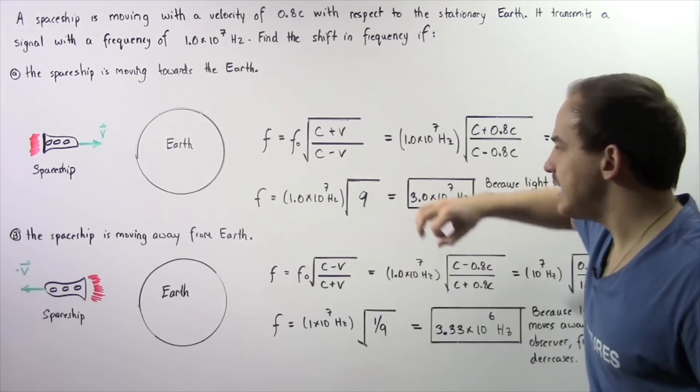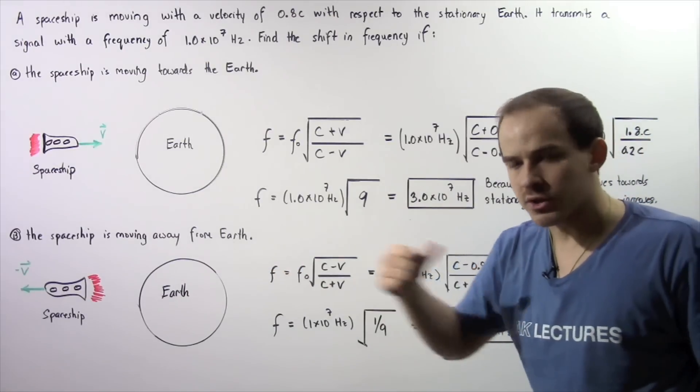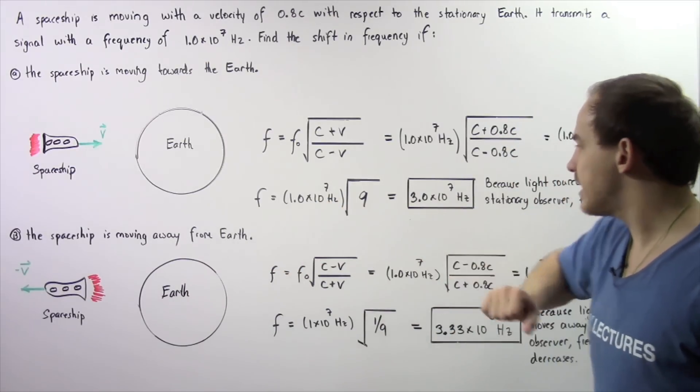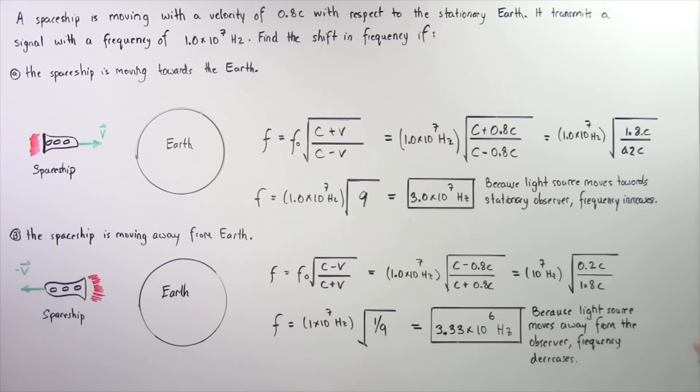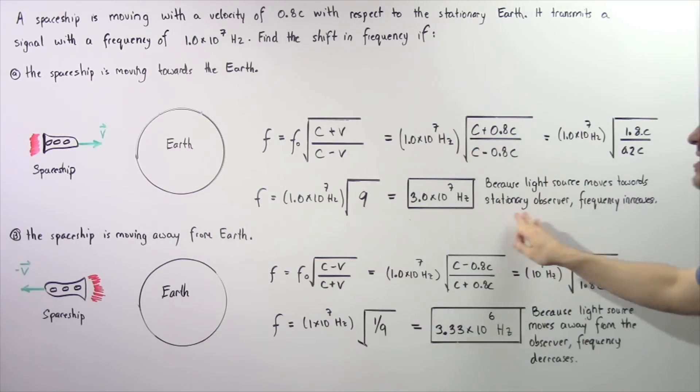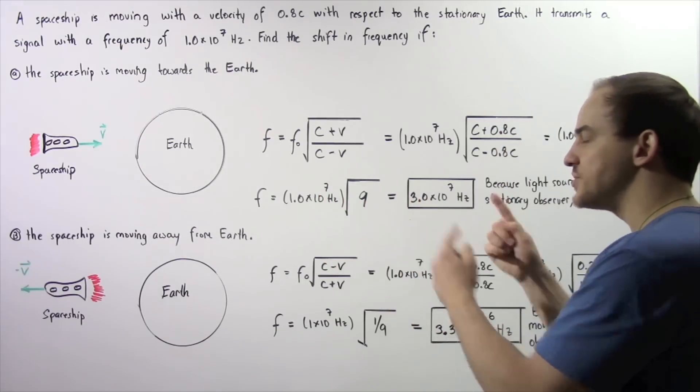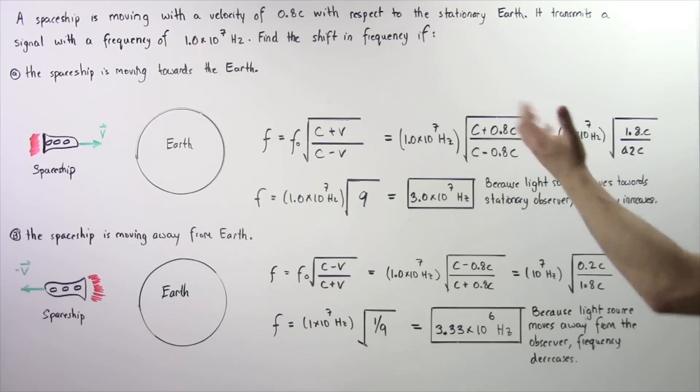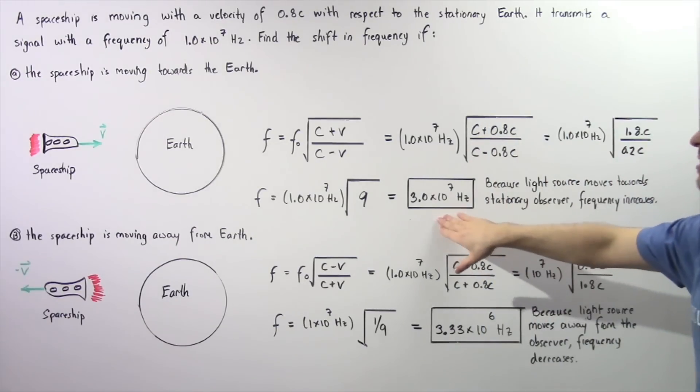The frequency is equal to the old frequency multiplied by the square root of 9 or 3. So 3 multiplied by this gives us a frequency of 3.0×10^7 Hz. Because the light source, the spaceship, is moving towards the stationary observer, the wavelength will decrease and the frequency will increase of our electromagnetic radiation.